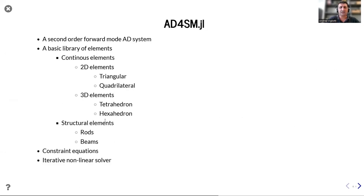AD4SM.jl is a package for finite element modeling through automatic differentiation. It includes a module for second order forward mode automatic differentiation for evaluating the gradient and the hessian of the free energy that takes advantage of the symmetry of the hessian. It also includes a basic library of continuous and structural elements both in 2D and 3D. It can handle constrained equations through Lagrange multipliers automatically and it includes an iterative solver for solving non-linear problems.